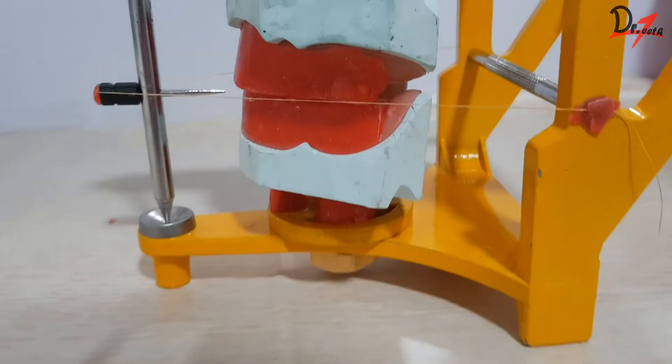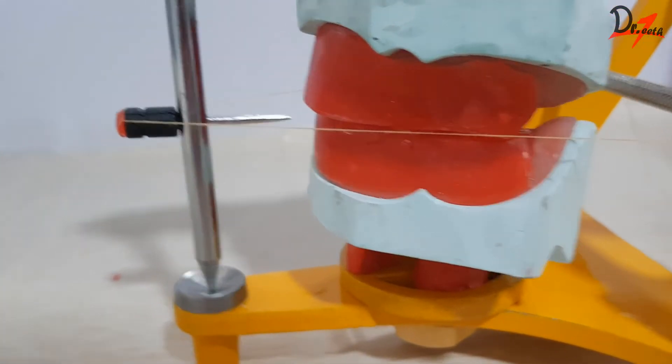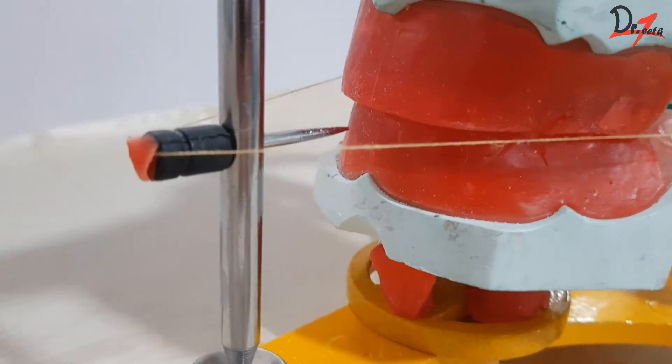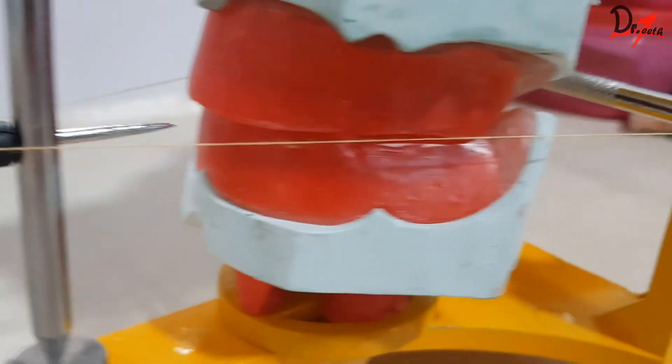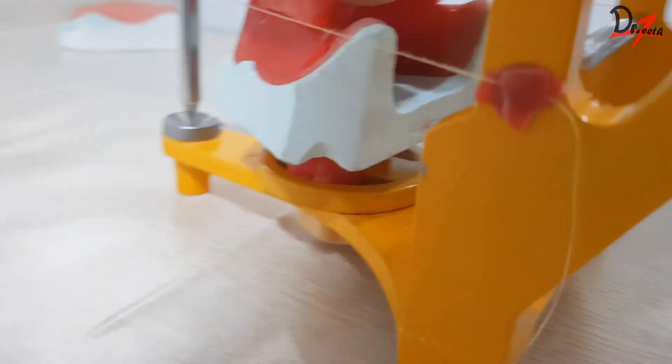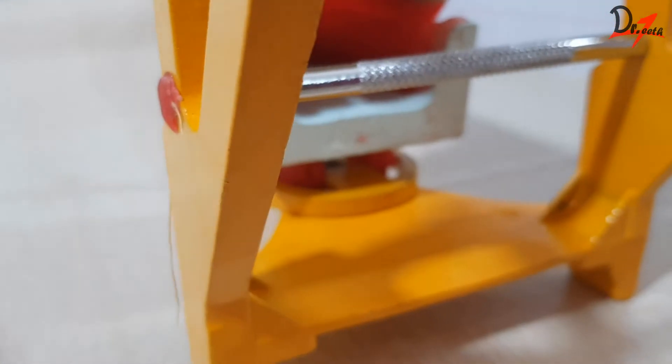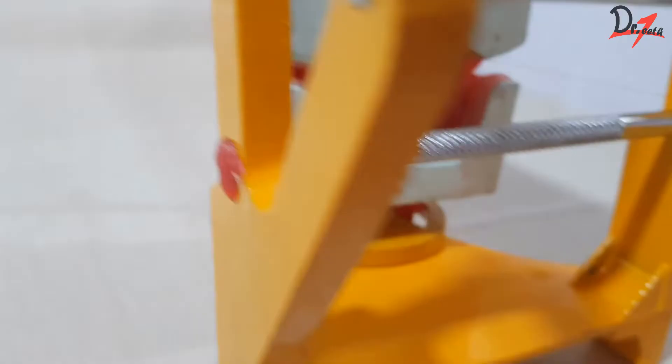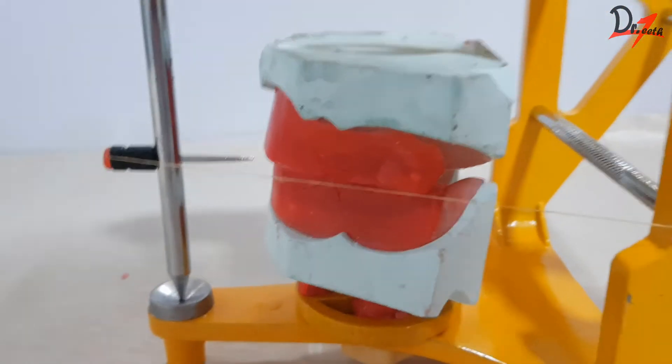So, as you can see here, we have a thread going from the central pin posteriorly till the reference rod. And on the opposite side also, we have the same thing from the central pin to the posterior rod. So, basically, we are creating that triangle with the help of a thread.